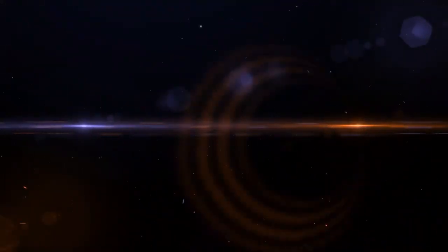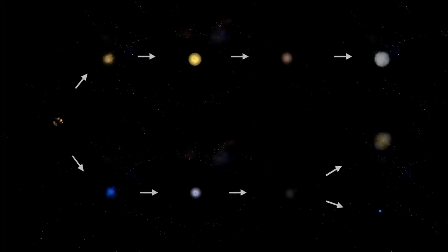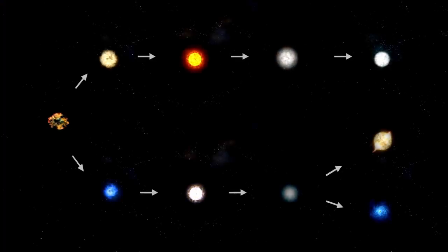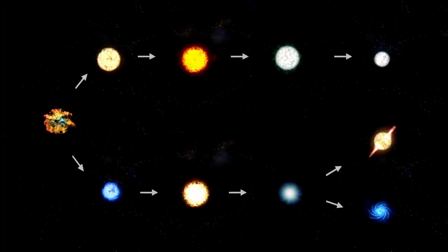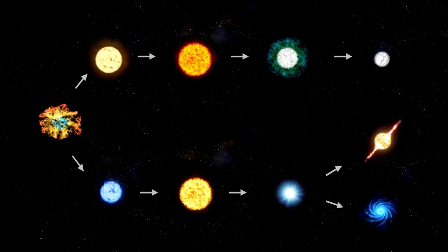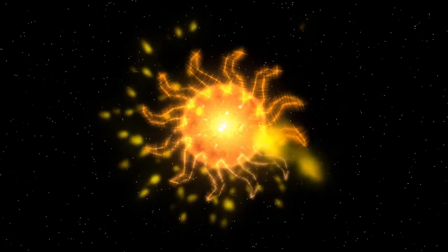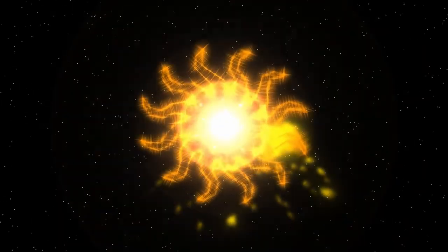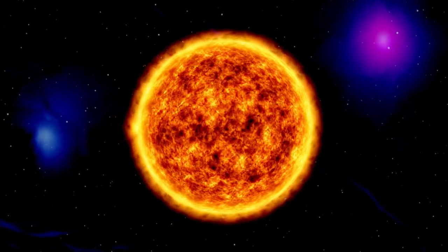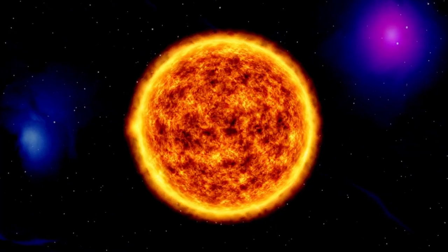Betelgeuse is classified as a semi-regular variable star, meaning it experiences multiple cycles of fluctuating brightness due to variations in its size and temperature. This red supergiant is known to exhibit two main periods of light pulsation. The first period lasts 400 days and is believed to be caused by pulsations in the fundamental mode. The second period is a longer cycle of approximately 5.6 years, and its origin remains unknown.